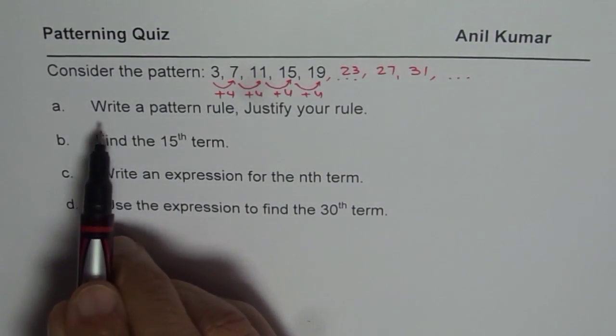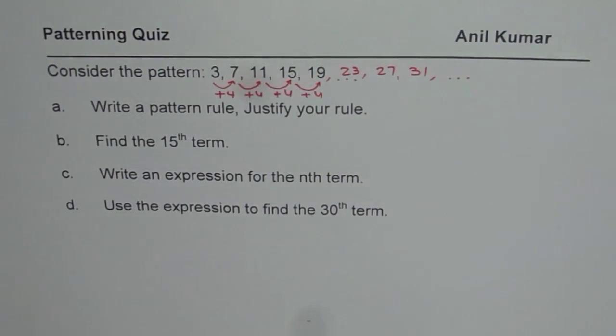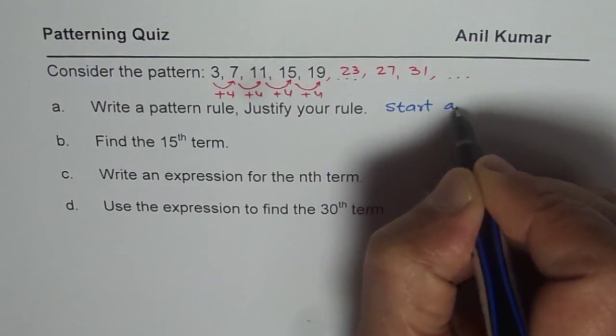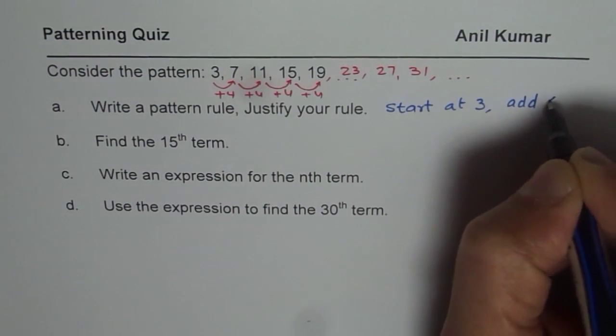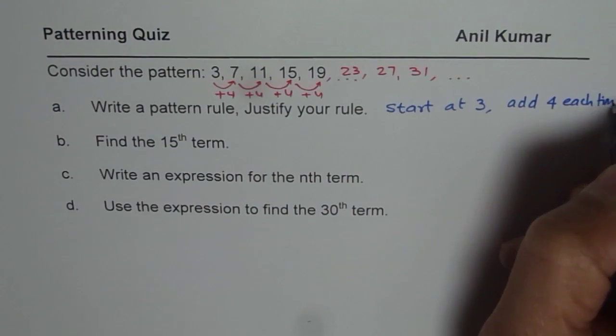So, first part is, write a pattern rule. Justify your rule. For me, the pattern rule could be, start at 3, add 4 each time. So, that becomes my pattern rule.